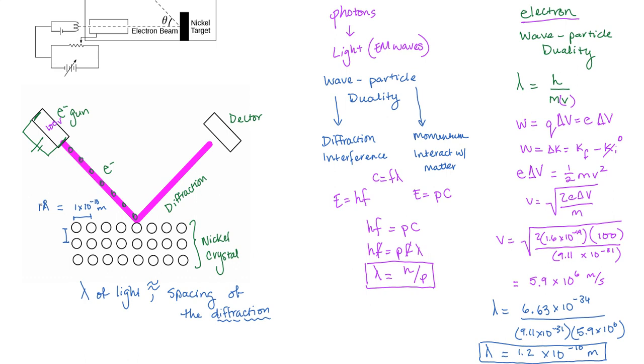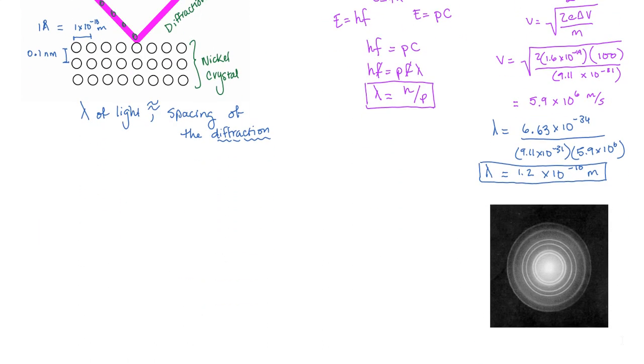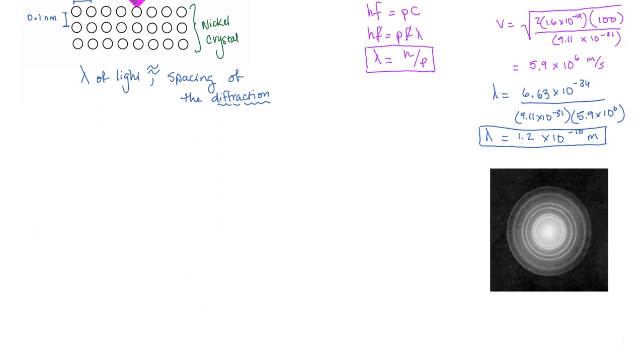Now this distance is oftentimes referred to as an angstrom. We'll use that symbol here. And it can also be written as 0.1 nanometers if you're trying to get some sort of reference here. Well, this is about 0.12 nanometers. They're almost the same size. And what we saw happen was one of the weirdest things ever. Here's an image of the pattern that forms from the diffraction of the electrons.